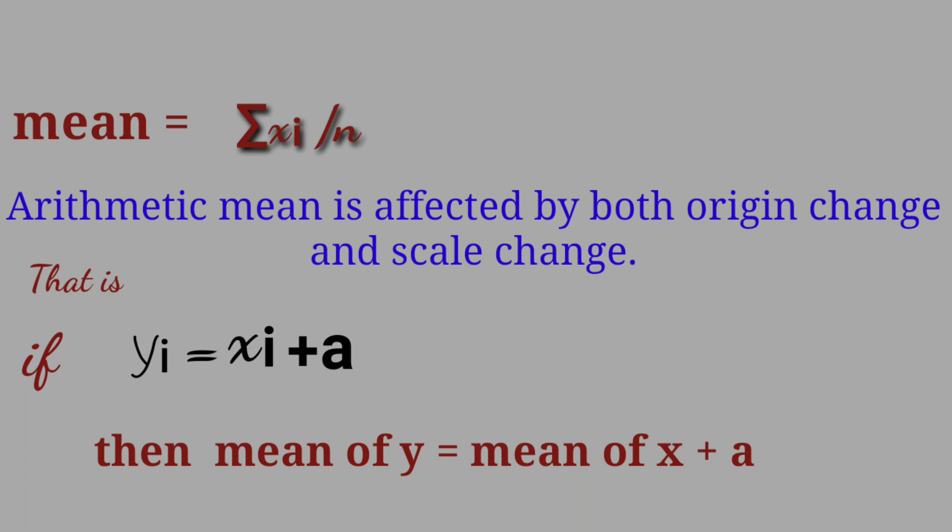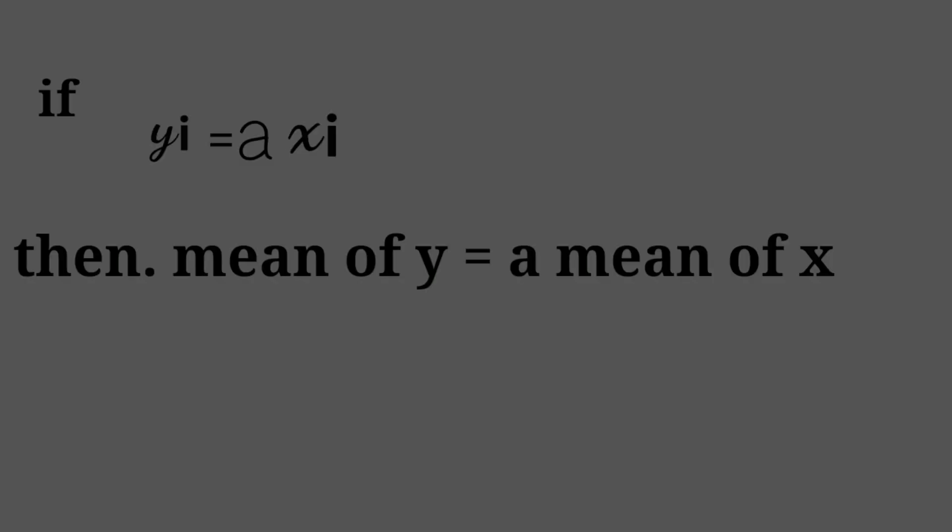With origin change, if a constant is added, the mean of y equals mean of x plus that constant. With scale change, if multiplied by a, mean of y equals a times mean of x. So Option A: increased by 5.